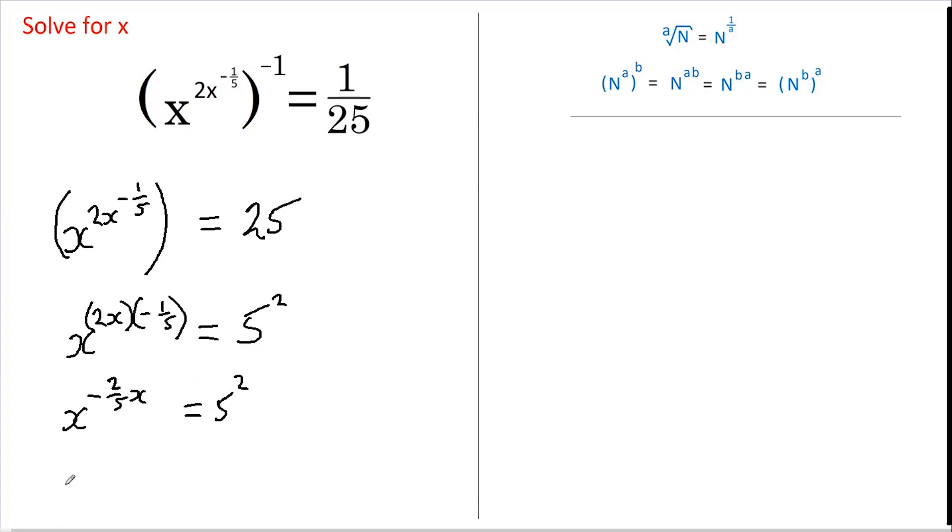So what I'm going to do is raise both sides to the power of negative 5 over 2. But remember, I can bring these powers down and multiply them together, so this now becomes x to the negative...